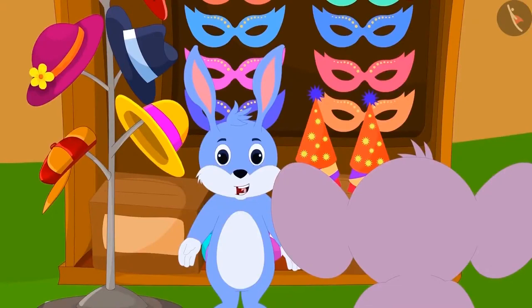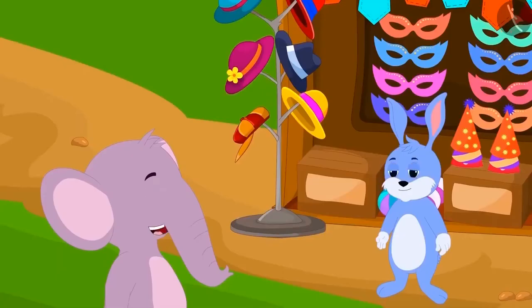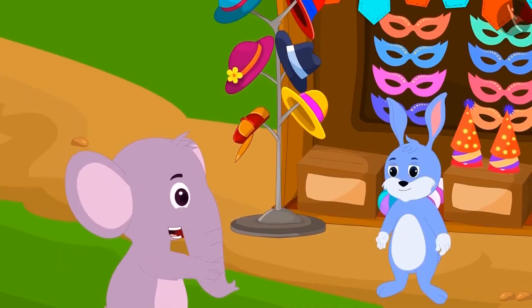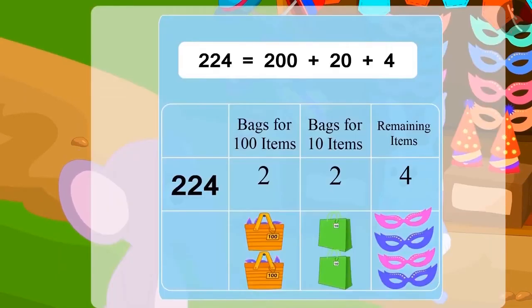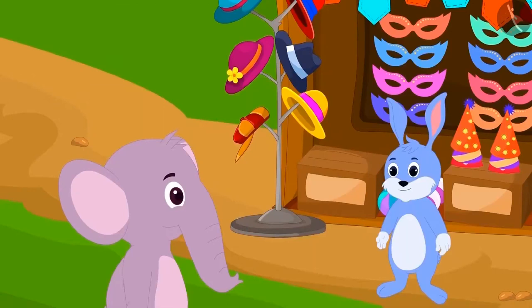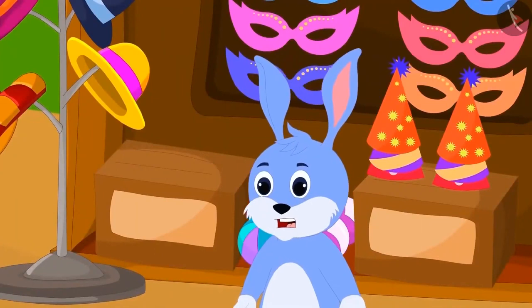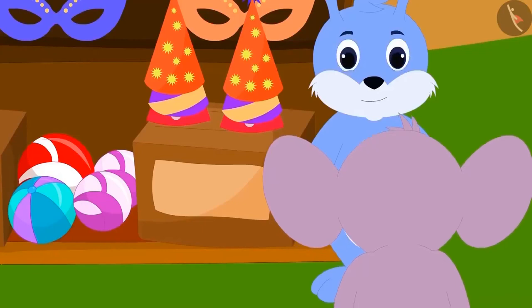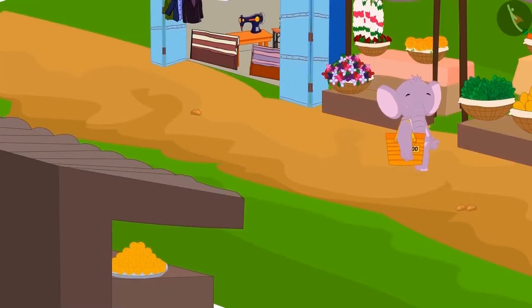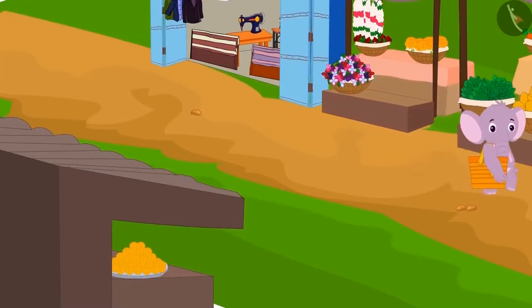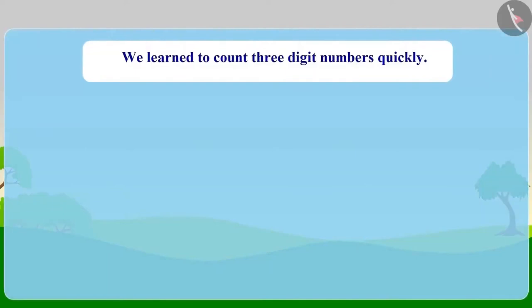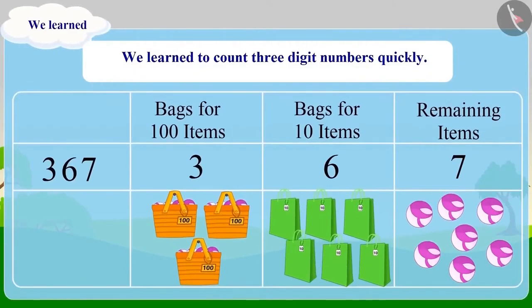Give me my money, Bunny said to Appu. First give me the 4 masks remaining, then I will give you the money, Appu replied. Bunny was shocked at how Appu counted all the masks so quickly. He gave Appu his 4 masks and took the money. Appu went home happily. Today we learnt to count 3-digit numbers quickly by grouping.